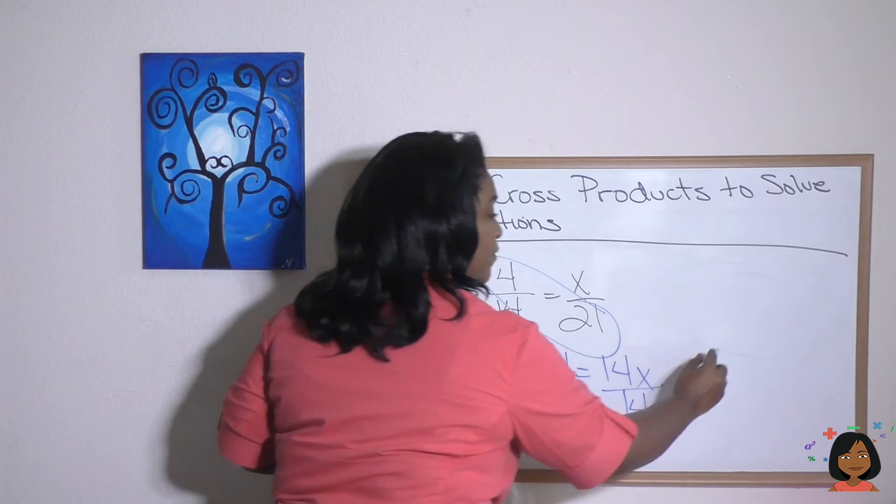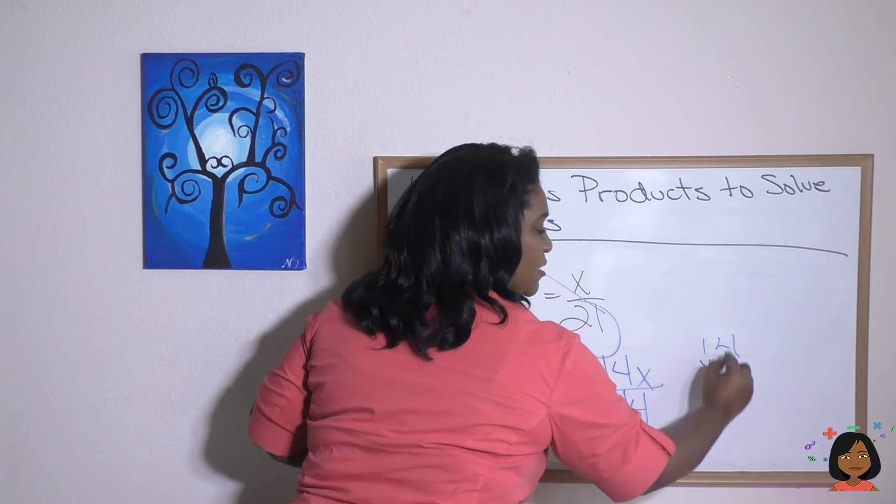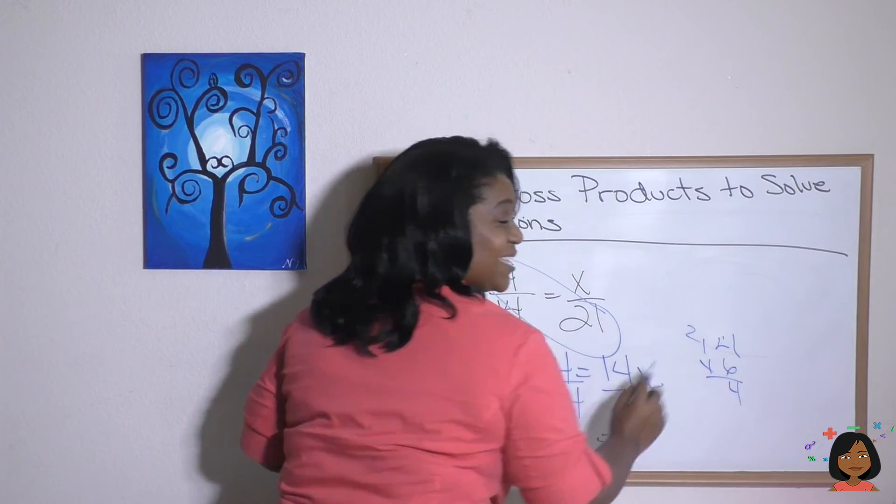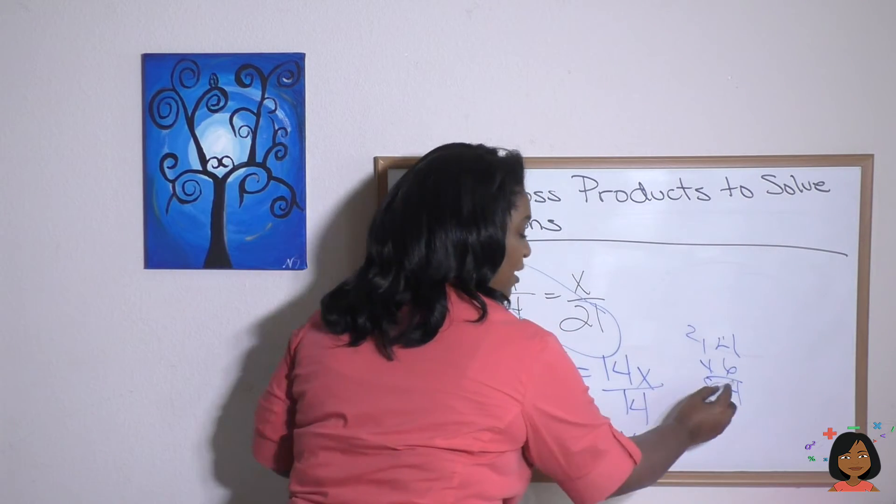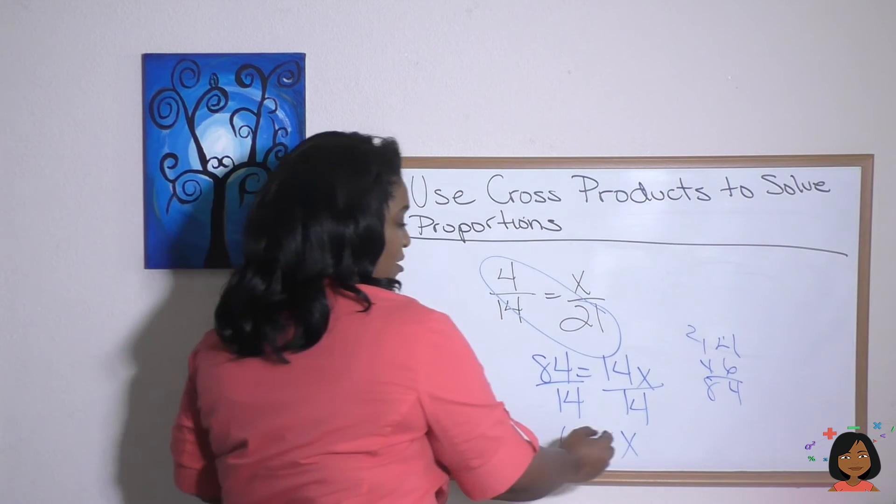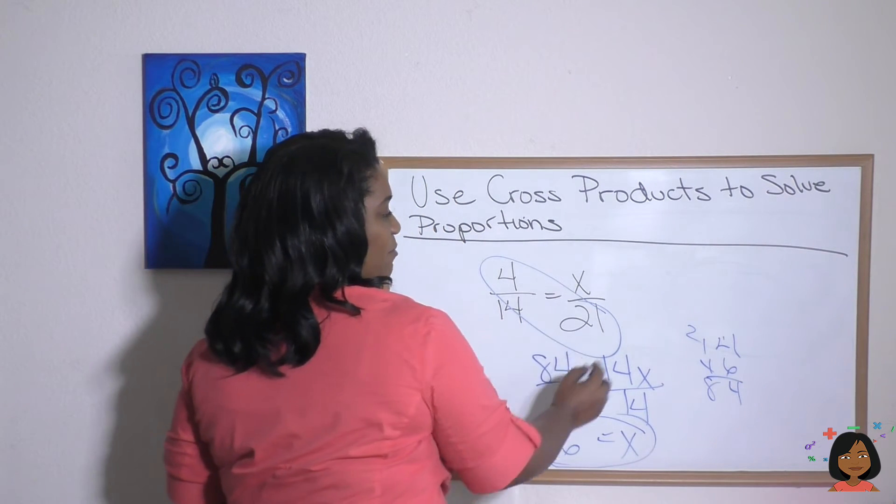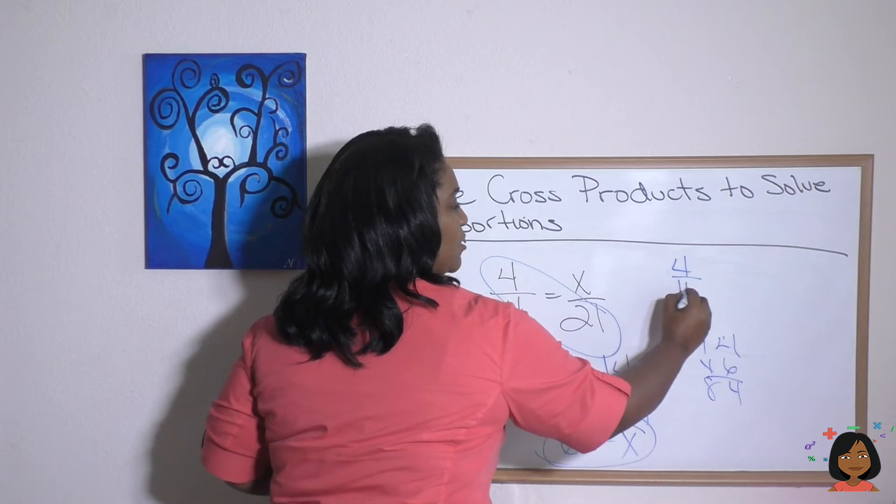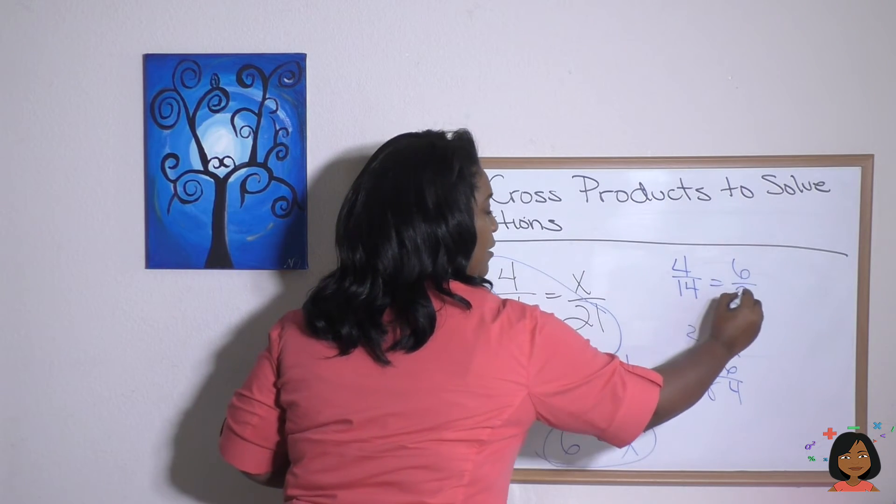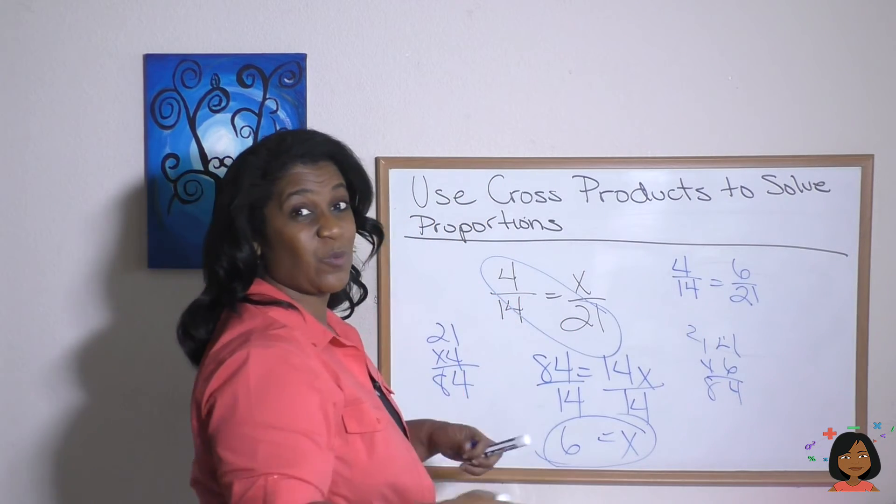Let's just double check it. 14 times six, six times four is 24, six times one is six plus two is 84. There you go. Six is our answer for our missing number, which means our proportion 4/14 equals 6/21.